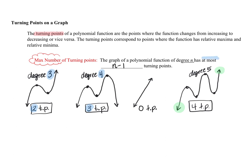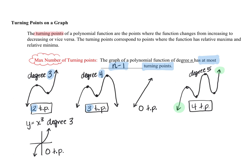Before we move on, let's discuss the phrase 'at most n minus one turning points.' It doesn't have to have n minus one turning points — that's just the maximum it could possibly have. For example, the basic parent function y equals x cubed is certainly a degree 3 polynomial. But if you recall its graph, it is an increasing function the entire time — it has no turning points, no maximum or minimum points. So just because a function is degree 3 doesn't mean it automatically has two turning points; it means it could have at most two turning points.